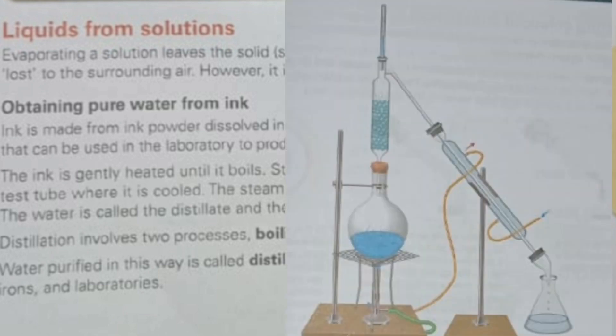The diagram shows the apparatus that can be used in the laboratory to produce pure water from ink. This apparatus is shown on page 65 of your book. In this apparatus, we will use ink and water. We will also add heat, but the water will not go into the surrounding air. We will also add the apparatus connected to a jar, in which we will also add the ink, gently heated until it boils.